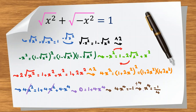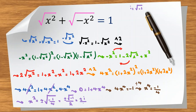Dividing both sides by 4 gives x to the 4th equals negative 1 over 4. We find x squared first: x squared equals plus or minus square root of negative 1 over 4, which simplifies to plus or minus square root of negative 1 over 2. Since by definition in complex numbers i equals square root of negative 1, this becomes plus or minus i over 2. So x equals plus or minus square root of plus or minus i over 2.